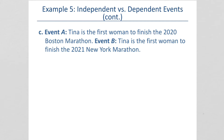This one's a little tricky. Tina is the first woman to finish the 2020 Boston Marathon, and also the first woman to finish the 2021 New York Marathon. At first glance, these seem like they would be independent. But there are a couple of things you might not know about marathons. First, the best starting positions are given to winners of previous races — so if she won the Boston Marathon, she'll be given a better starting position for the New York Marathon. Also, years of training will have a positive effect on your body, making her even more athletically fit for event B than event A. So these are dependent events.